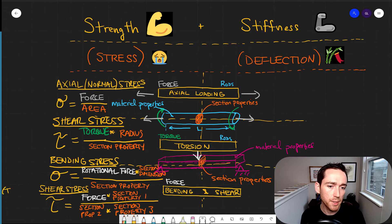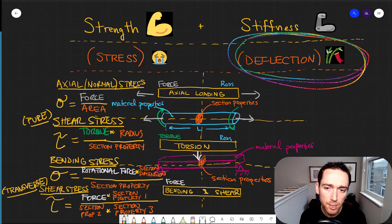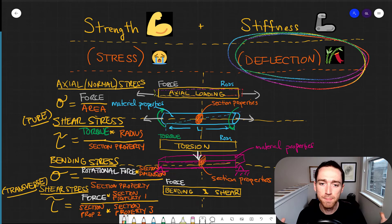So where do the material properties come in? The intrinsic nature of the material. They come in at deflection.